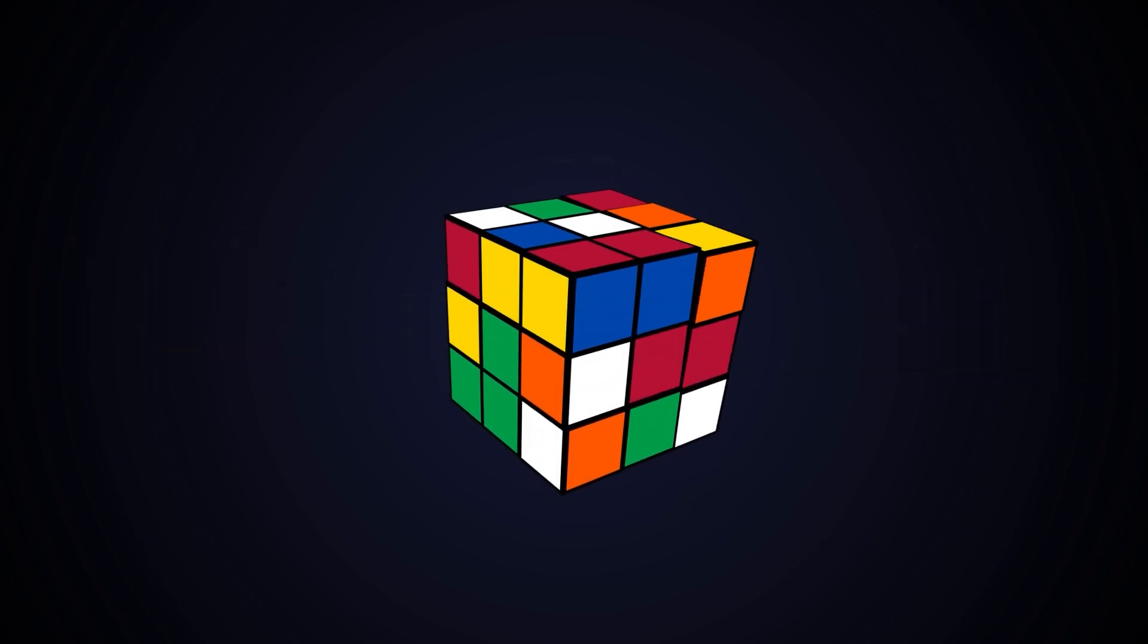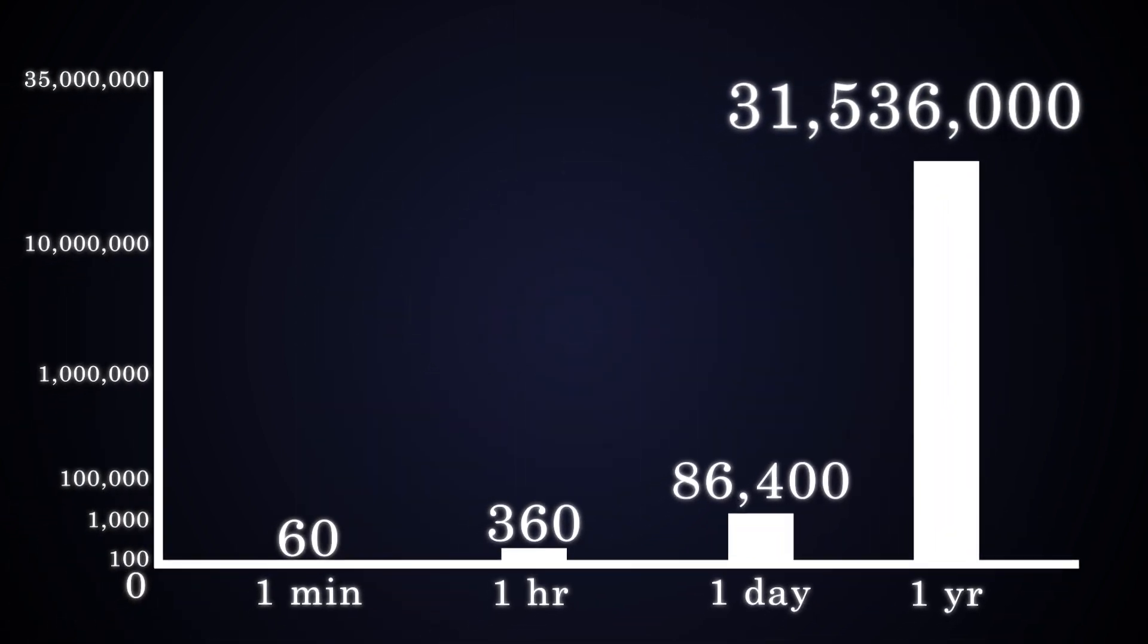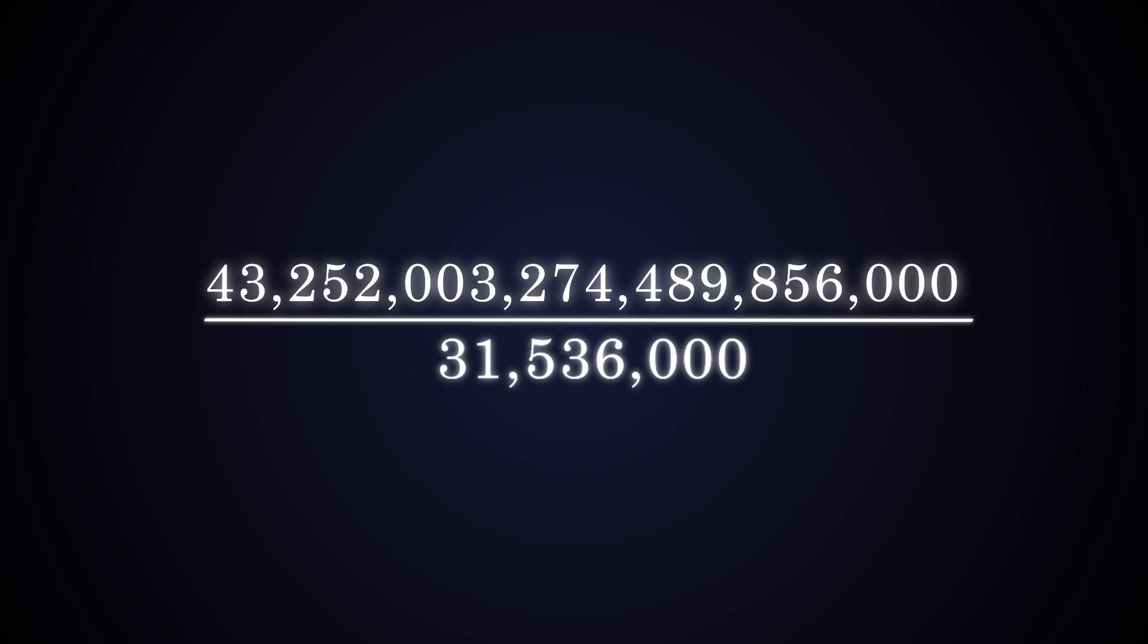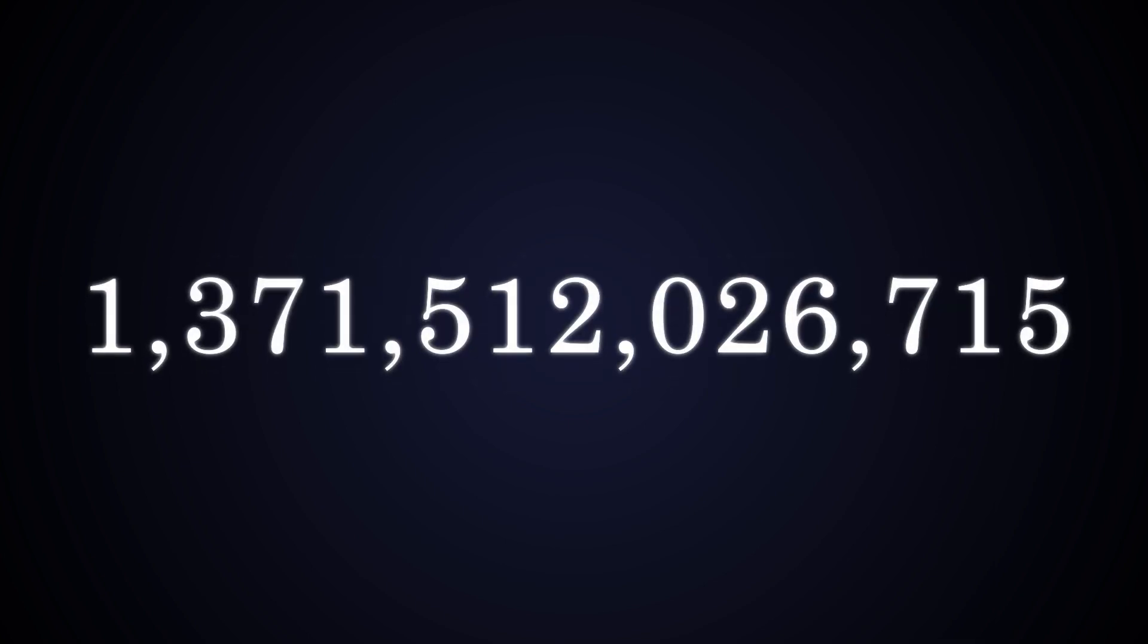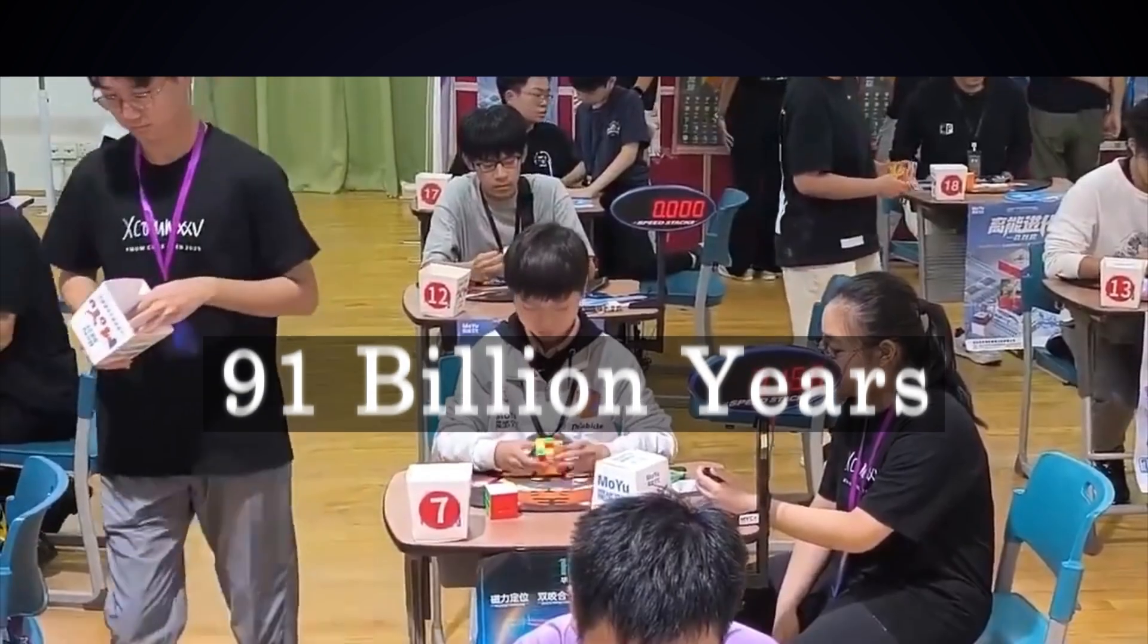If you make one turn every second, that's 60 turns in a minute, 3,600 in an hour, 86,400 in a day, and about 31 million in a year. But if we divide the amount of possible combinations by this number, it'll take on average over 1 trillion years to solve.